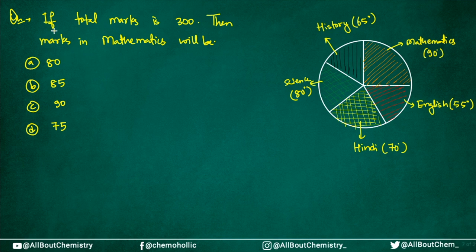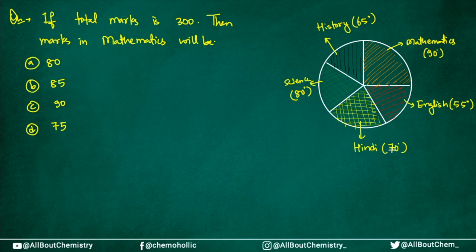Let's take this question. It says that if the total marks is 300, then the marks in mathematics will be — and you are given a pie chart. Angles are represented for every subject: mathematics is 90 degrees, English is 55 degrees, Hindi 70 degrees, science is 80 degrees, and history is 65 degrees. You are asked for the marks in mathematics.